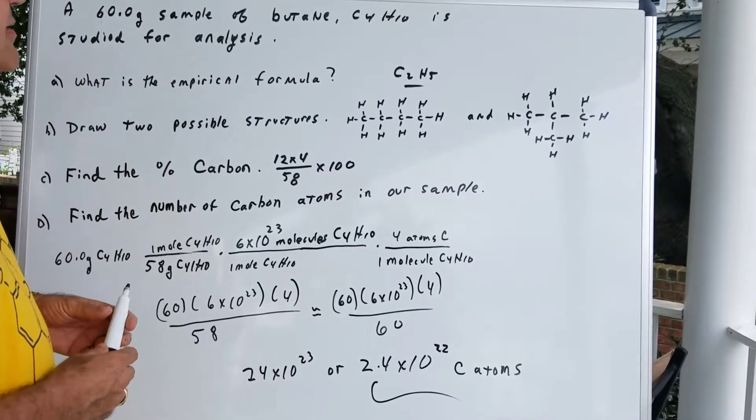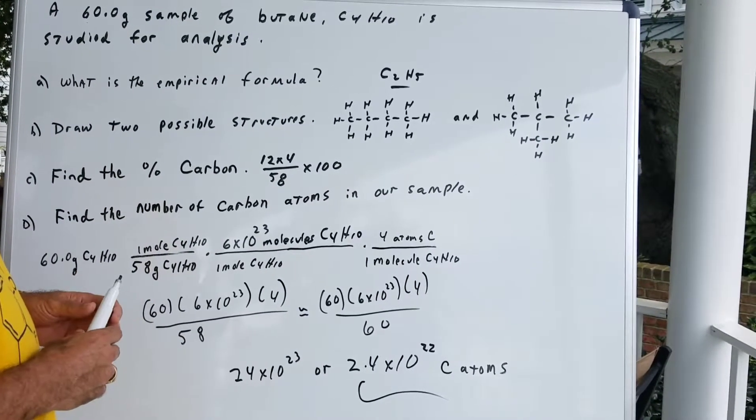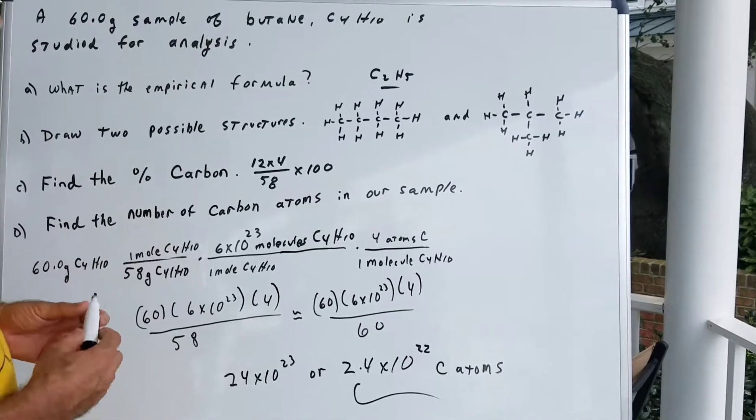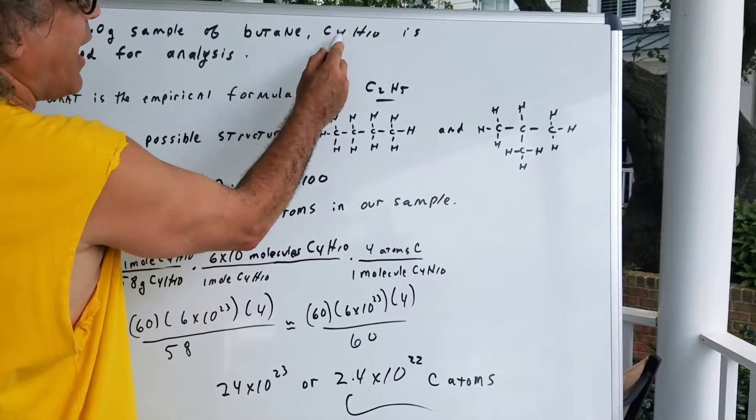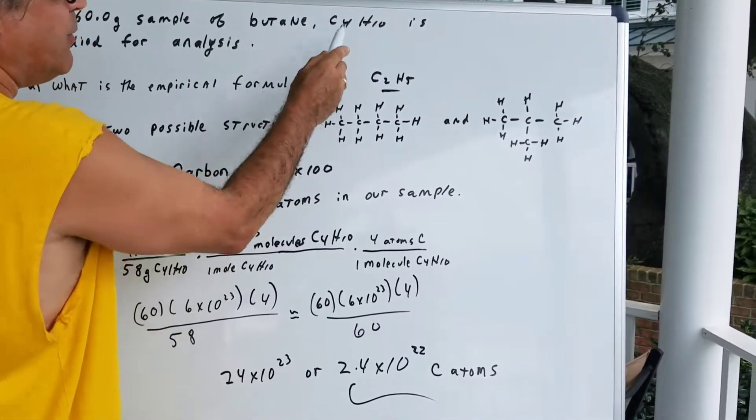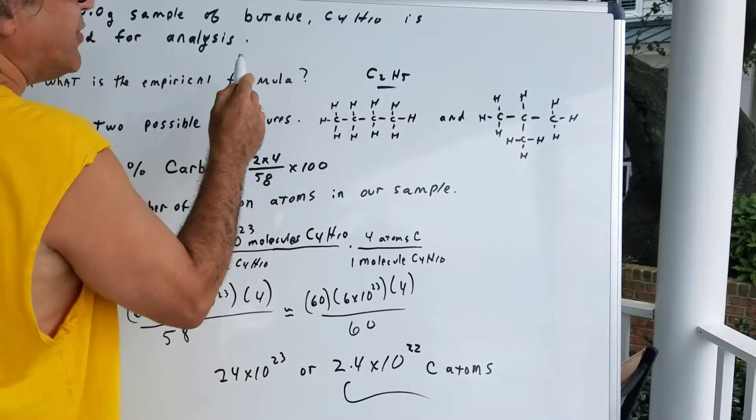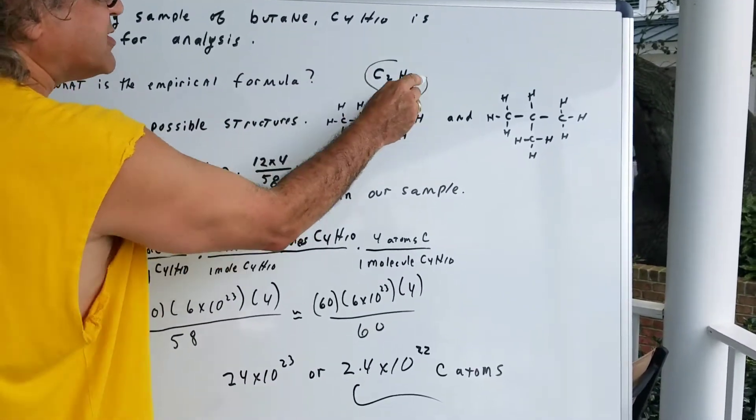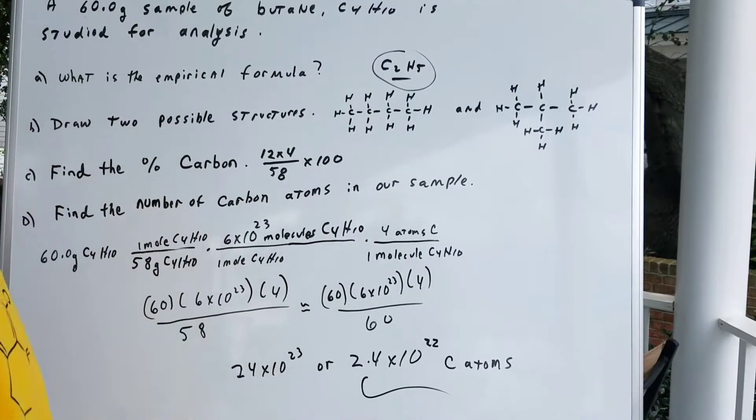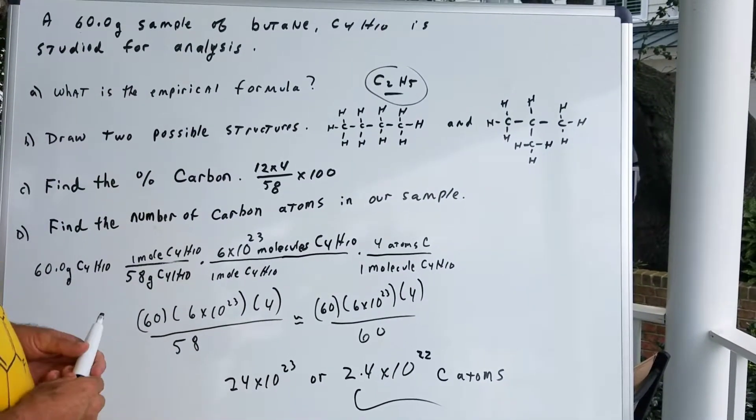The empirical formula is the simplest formula. It gives us the simplest ratio of atoms. If I divide by the common denominator, it would be a 2. So if you divided this by a 2 and this by a 2, it would give you the simplest ratio of C2H5, which is the empirical formula.